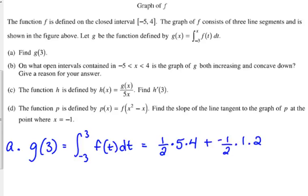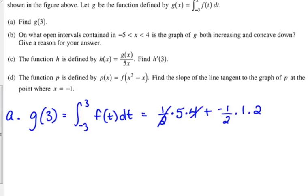Crunch the numbers. 1 half times 4 is 2. So, the first part is 10. The second part is negative 1. So, g of 3 is equal to 9. You get one point for the answer. It just gives you a point for the answer.